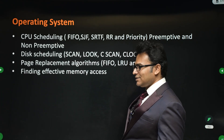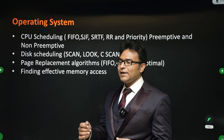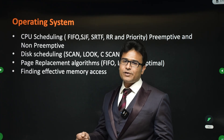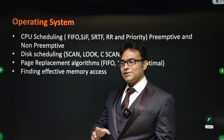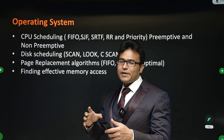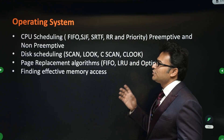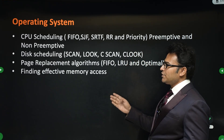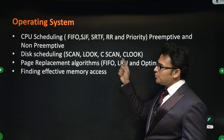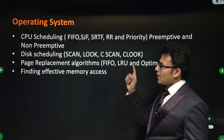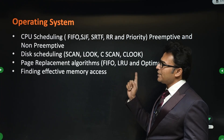For operating systems, the goal is to get at least 50 marks in 30 days, so focus on the key topics: CPU scheduling and disk scheduling — you will get at least one mark from scheduling. Page replacement algorithms are important, and finding effective memory access time is also important.